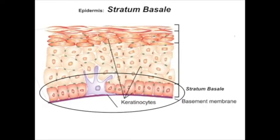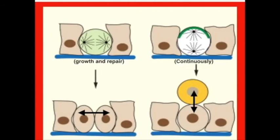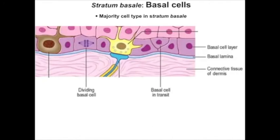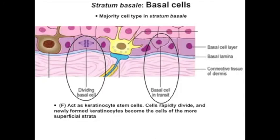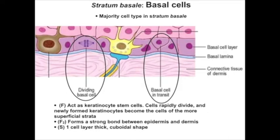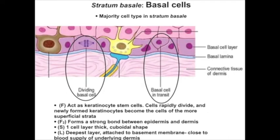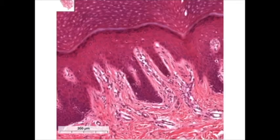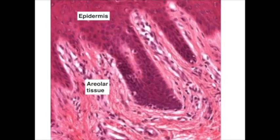The deepest layer contains all the cells that serve as a source for all the more superficial cells. Cells of this layer continuously divide to replace those cells ultimately lost by desquamation. They can also divide when skin is growing — during development or across a gap created by a cut or wound. These are the basal cells of the stratum basale, which are keratinocyte stem cells. Besides their function as stem cells, they are also connected to the basement membrane, which is the link between the epidermis and the underlying connective tissue of the dermis. To identify the stratum basale, look for cells in direct contact with the underlying areolar tissue.